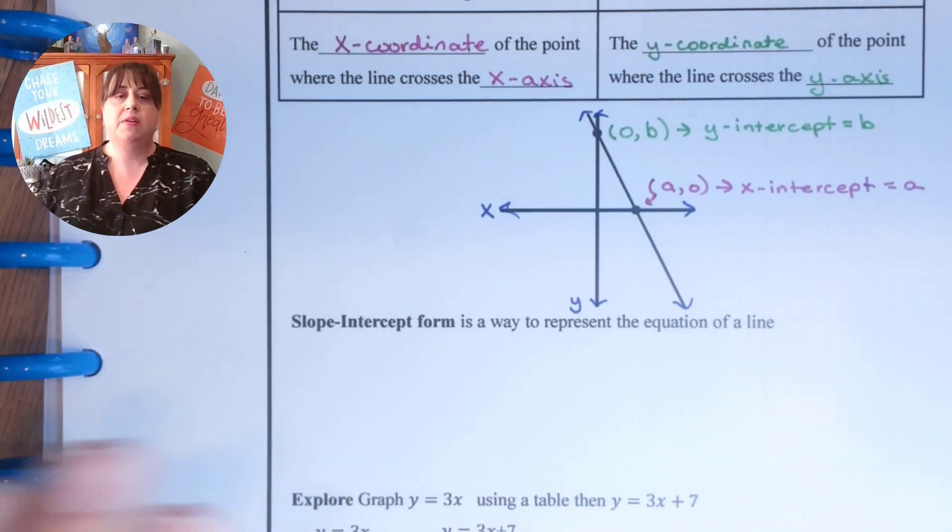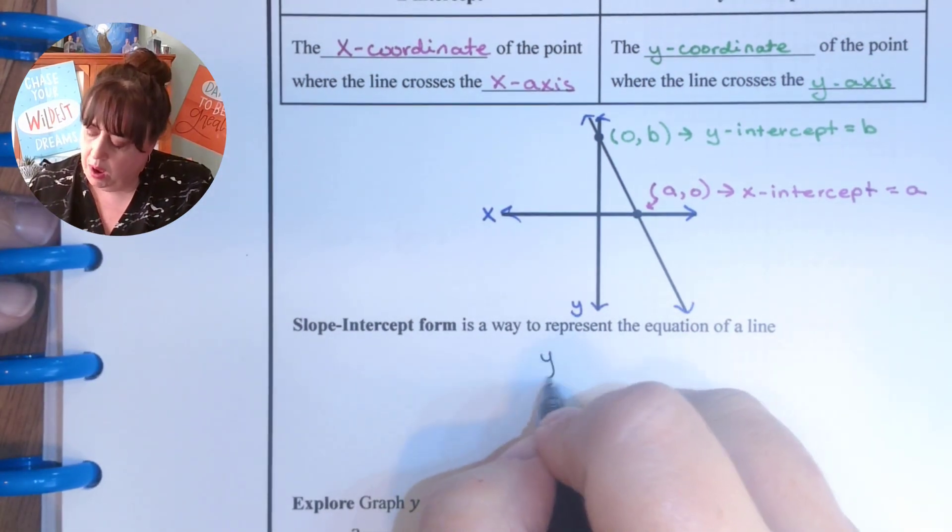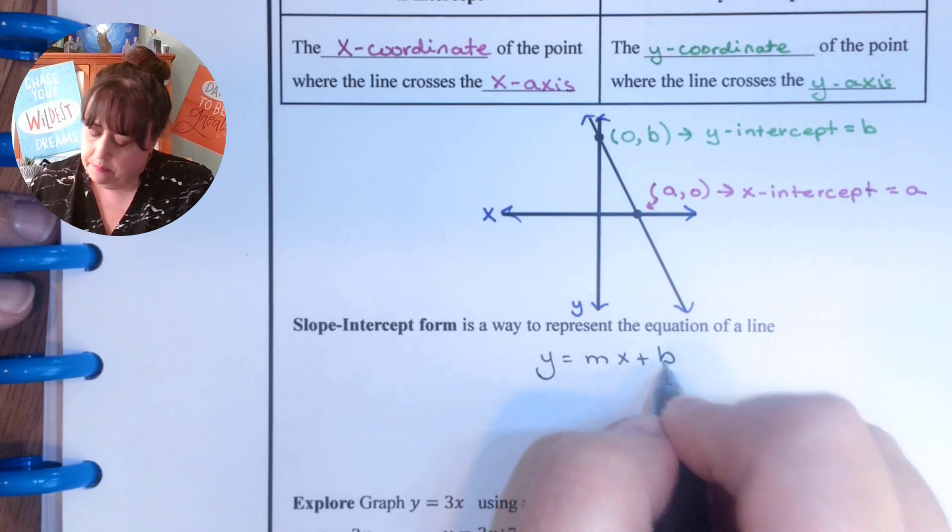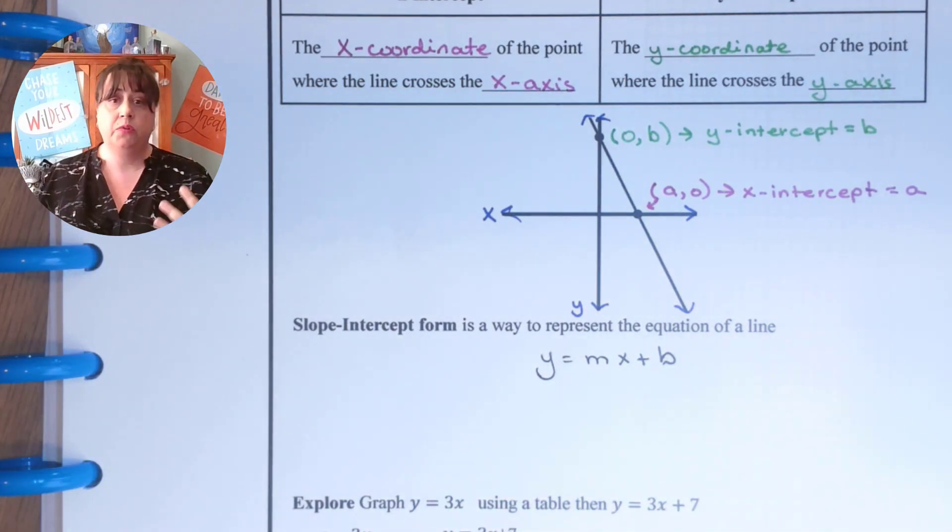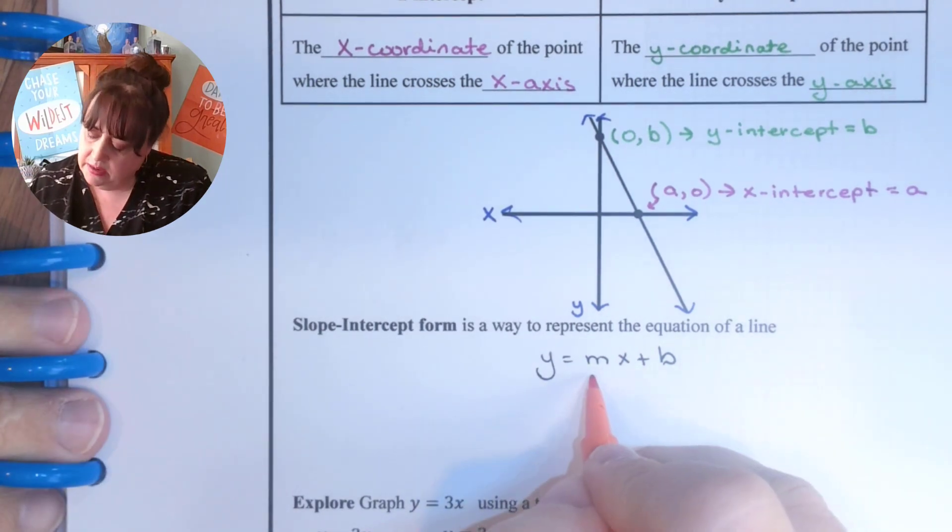So slope-intercept form is a way for us to represent the equation of a line and this one is like something you will have to memorize, like completely memorize. And it is y equals mx plus b. So there are some certain things here you already know. For instance, I know you know this one already that m is the slope.